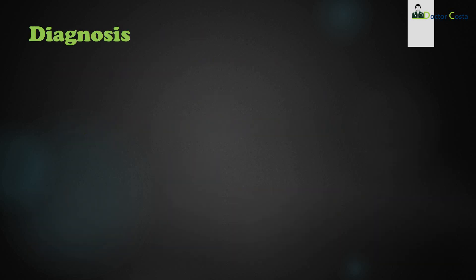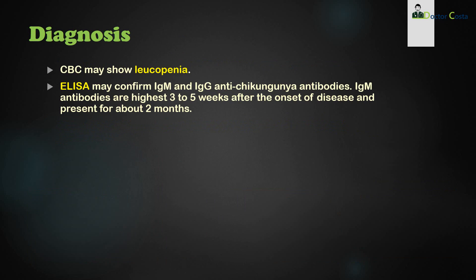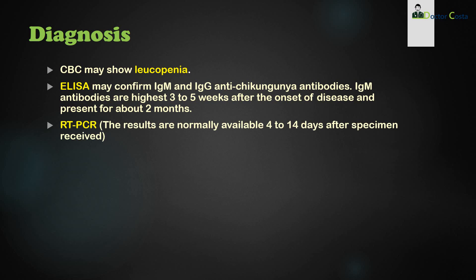For diagnosis of chikungunya, a complete blood count may show leukopenia. Enzyme-linked immunosorbent assay (ELISA) may confirm IgM and IgG anti-chikungunya antibodies. IgM antibodies are highest three to five weeks after onset of disease and persist for about two months. Reverse transcriptase polymerase chain reaction (RT-PCR) results are normally available 4 to 14 days after specimen receipt, and blood must be collected during the viremic period.